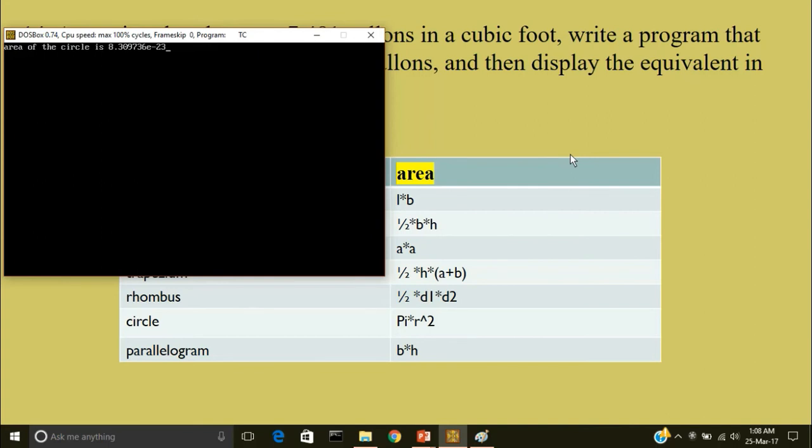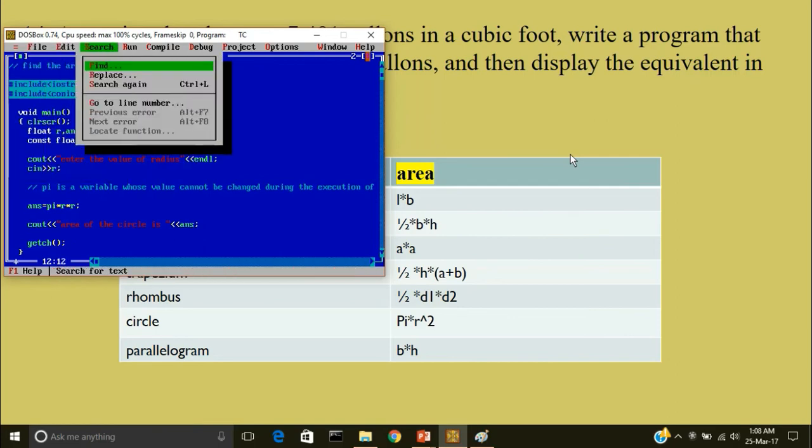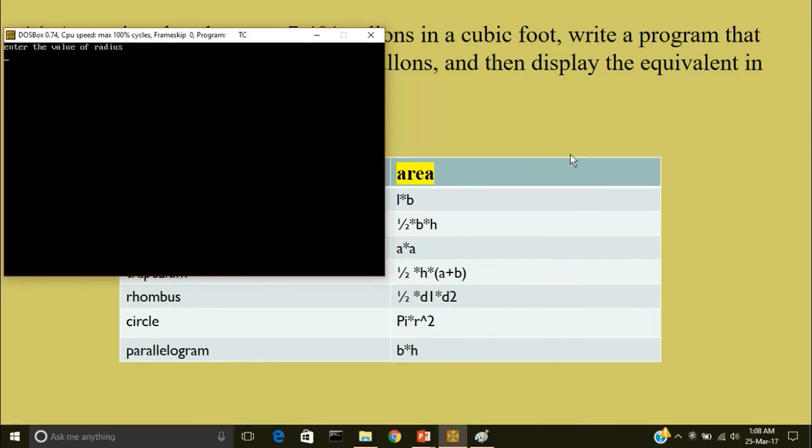Okay. What the hell is happening here. Answer is equal to pi star pi. Oh, I'm not accepting the value of radius. So it is displaying any garbage value. Cout enter the value of radius, less than less than endl. Cin greater than greater than r. Now I'll run the program. Enter the value of radius. I'll say 2. So the area of circle is 12.56.